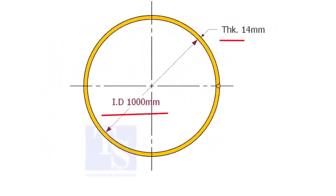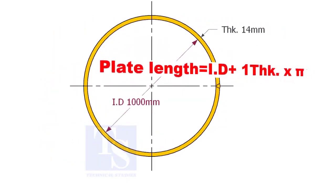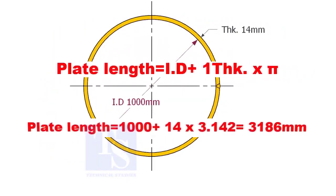Assume that the ID of the pipe is 1000 mm and the thickness is 14 mm, then add 1 thickness to the ID, and then multiply with pi.